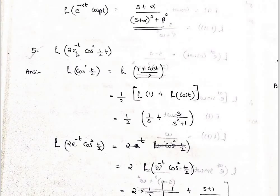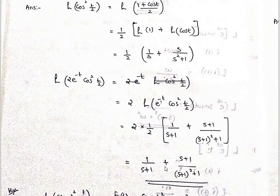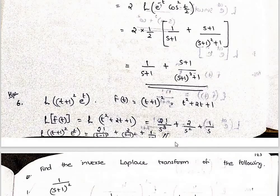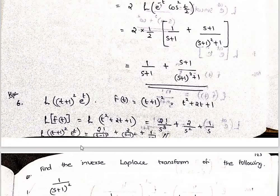Now e raised to minus t times cos squared(t/2). We use cos²(t/2) equals (1 plus cos t) divided by 2. So L of cos²(t/2) is L of (1 plus cos t) divided by 2. Then substitute s replaced by s plus 1 for the e raised to minus t factor.